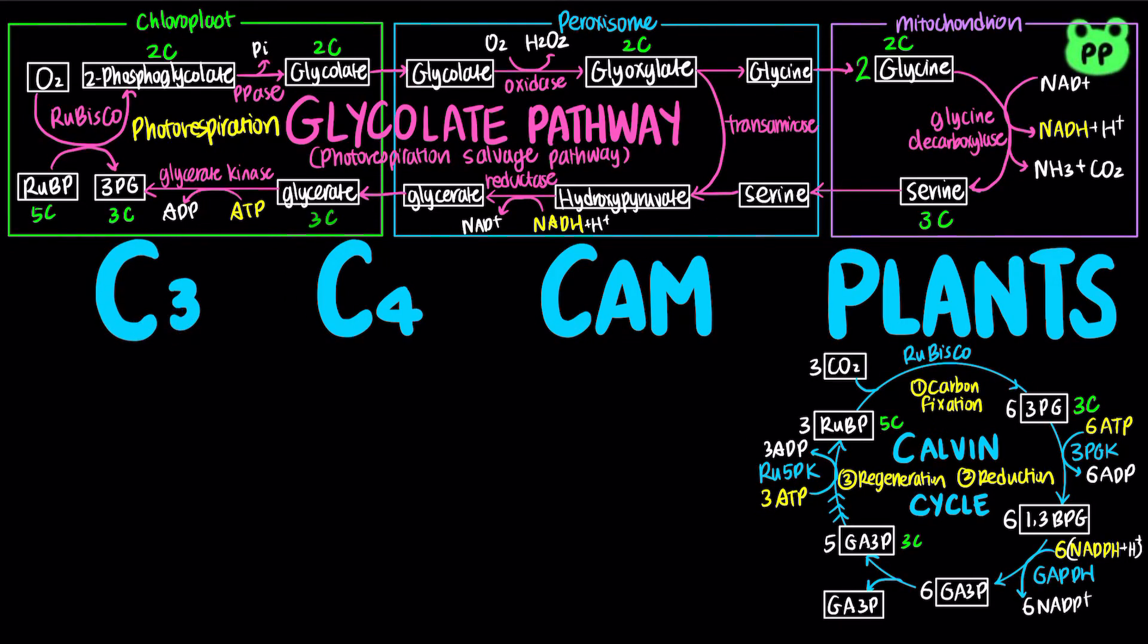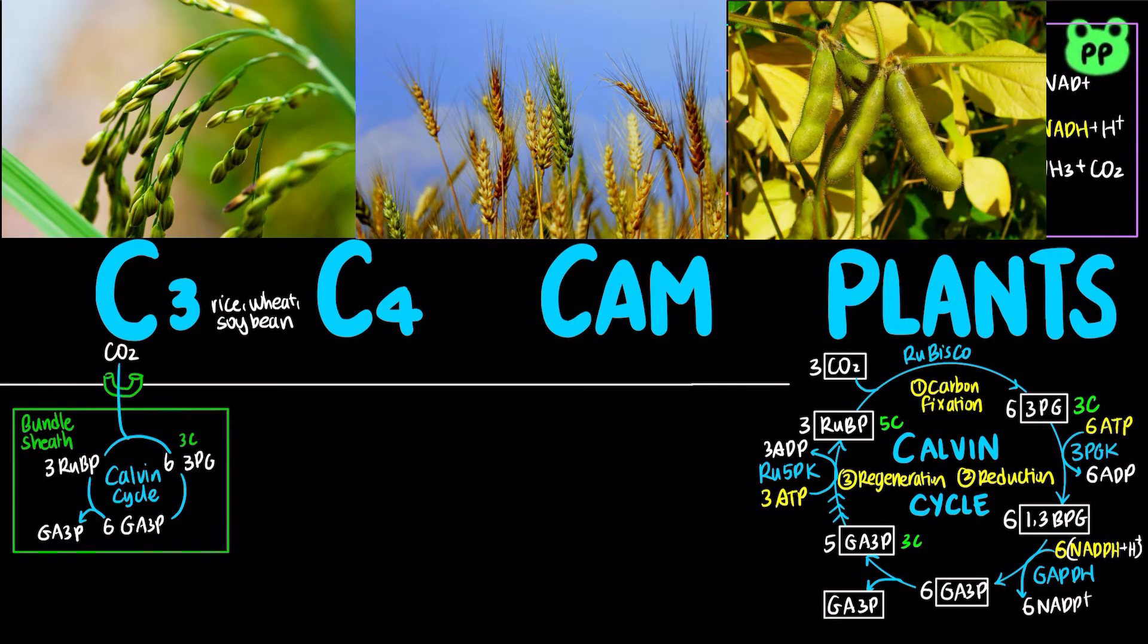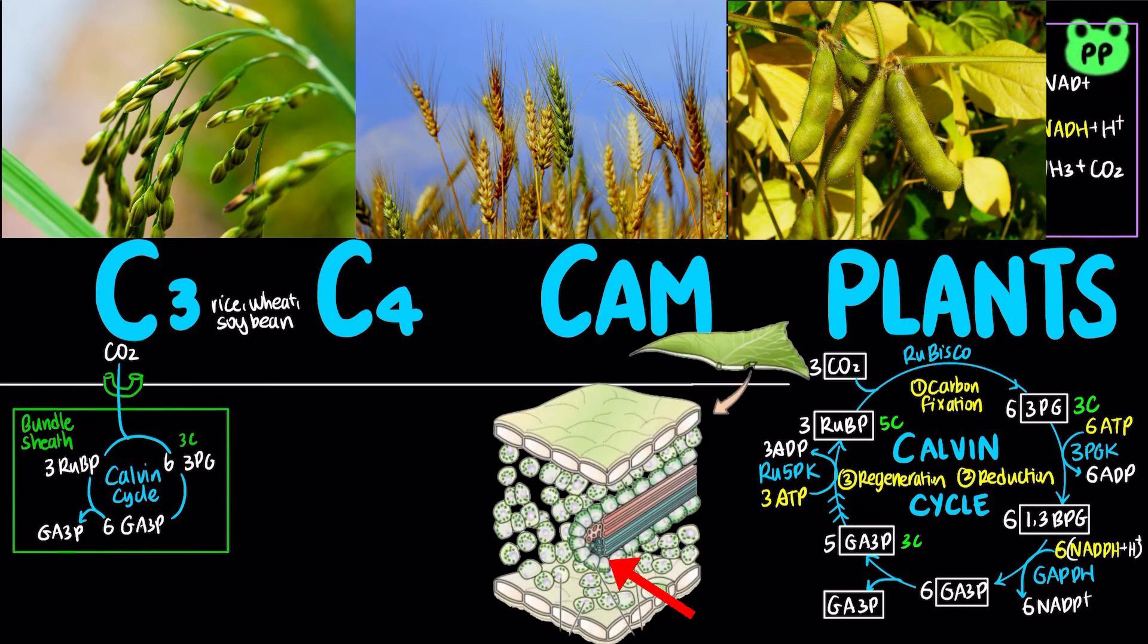Photorespiration is an energy-consuming process that led to evolutionary adaptations in the carbon assimilation processes in plants. C3 plants, including rice, wheat, and soybean, only use the Calvin cycle to assimilate carbon dioxide, which occurs in the leaf-bundle sheath cells. Carbon is fixed by RUBISCO as the 3-carbon compound 3-phosphoglycerate.